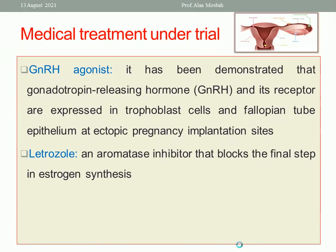There are some medical treatments under trial, not yet proven. GnRH agonists have been investigated — gonadotropin-releasing hormone and its receptors are expressed in trophoblastic cells at ectopic implantation sites. Letrozole, an aromatase inhibitor that blocks the final step of estrogen synthesis, is also being explored as a medical treatment for ectopic pregnancy.